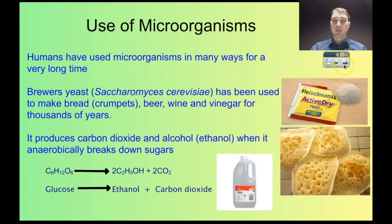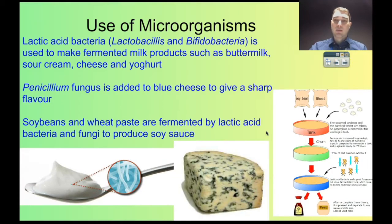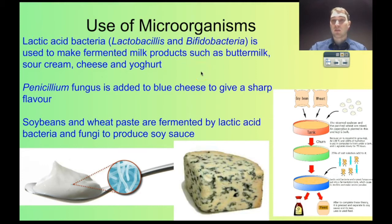This has been used actively by humans for about 10,000 years. We use microorganisms on other food products too. We use lactic acid bacteria such as Lactobacillus and Bifidobacteria to make fermented milk products like buttermilk, sour cream, cheese, and yogurt. You add a culture of bacteria to the milk, give it some time at a certain temperature, and the lactic acid bacteria produce lactic acid, which changes the structure of the proteins in the milk and you get your food product.